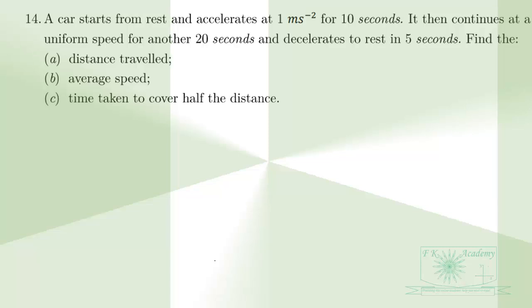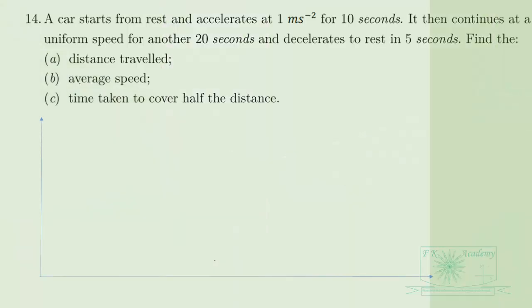The car then continues at a uniform speed for another 20 seconds, and decelerates to rest in 5 seconds. Find the total distance traveled. The distance traveled is the area under the velocity-time graph.